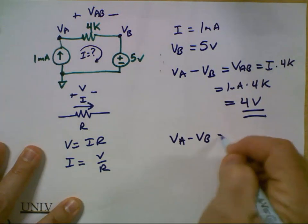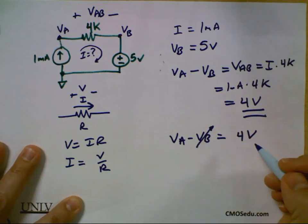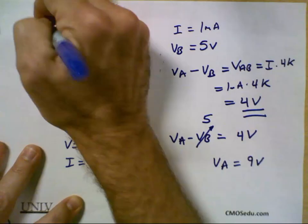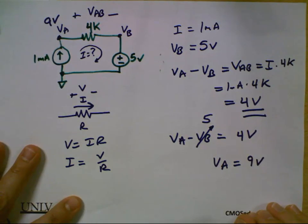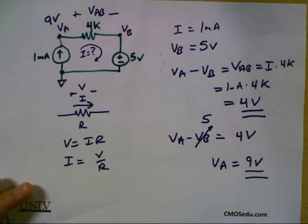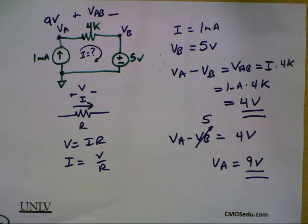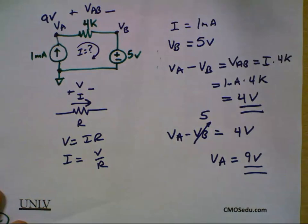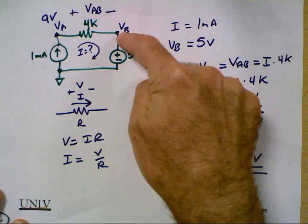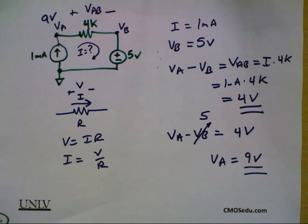VA minus VB equals 4 volts, and VB is 5, so VA is 9 volts. Key points: you see a current source in the circuit — you don't think deep. Every place where that current is connected in series with no branching, you know what the current is — write it down, it's 1 milliamp. Every place you see a voltage source connected to ground, write down the voltage at the other side. Here it's 5 volts; if I flipped it around, it'd be minus 5. Start that out, write it on the schematic, and use it to guide you.